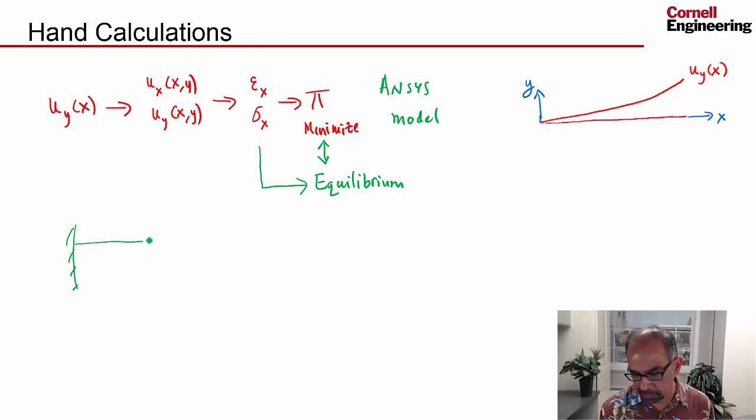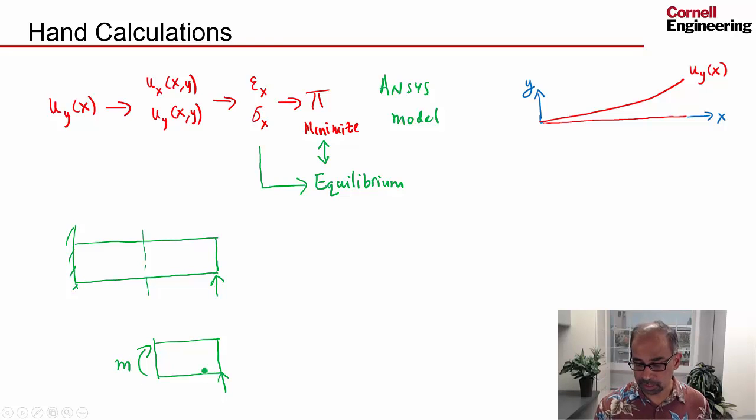If I have the beam here, I'll draw a two-dimensional view of it. If I have the load in the positive y direction and I take a cross section like that, I can draw that cross section here and find what that moment is without finding the displacement. That moment is going to be a function of x, and once I know the moment, I can find what the corresponding deflected shape of the neutral axis has to be.